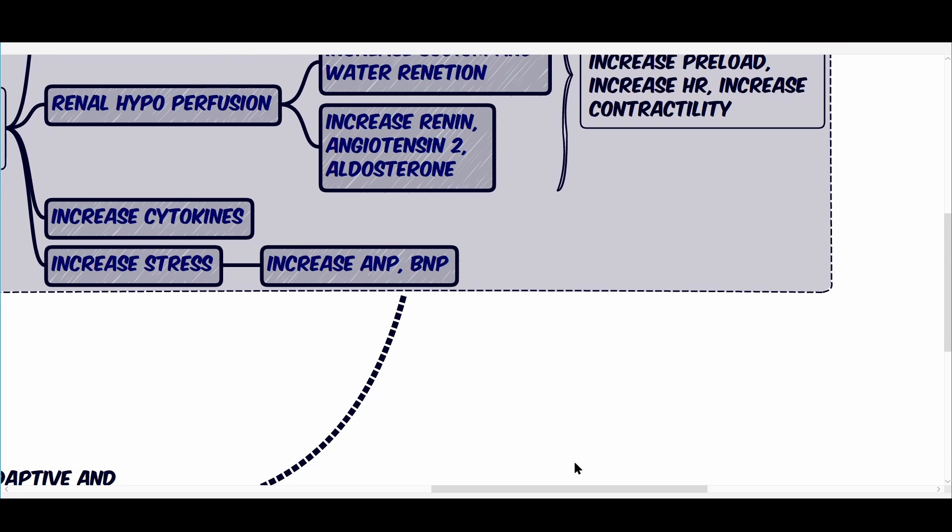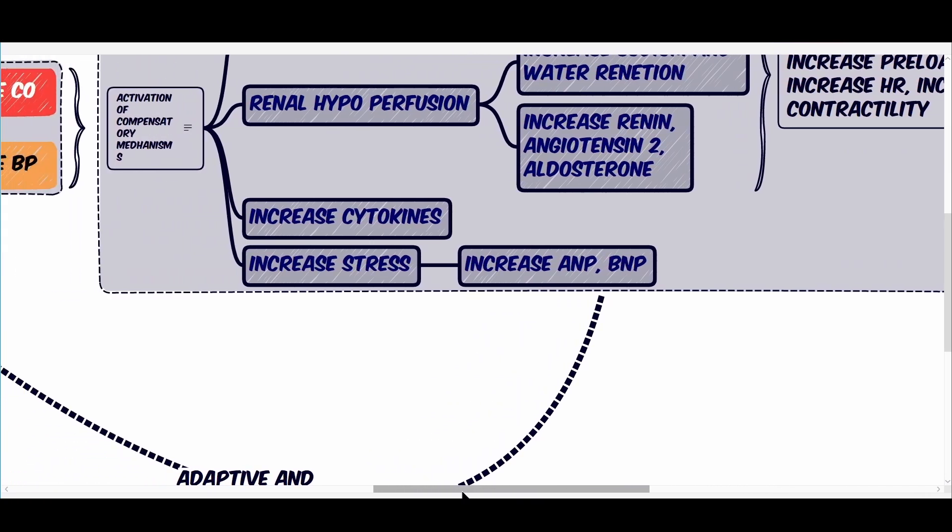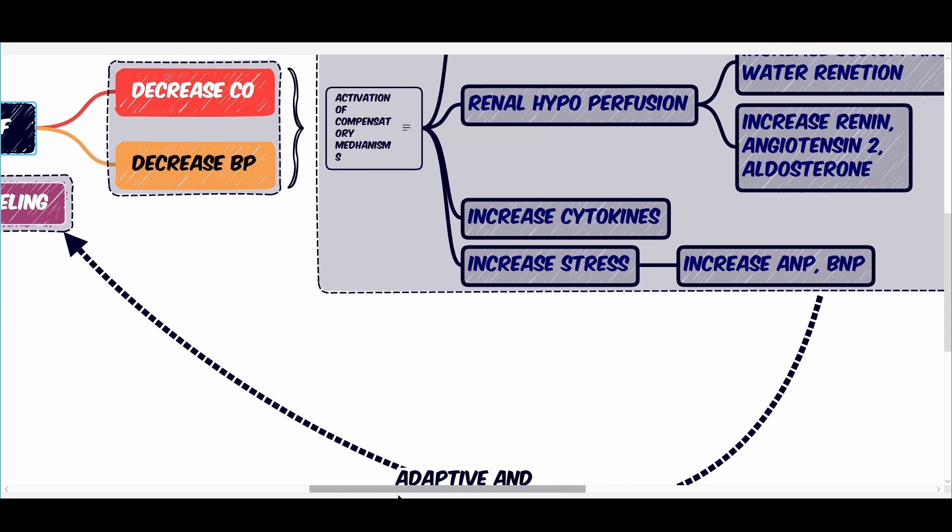Additionally, there will be an increase in cytokines and myocardial wall stress, which increases atrial natriuretic peptide and brain natriuretic peptide in addition to the main compensatory mechanisms.